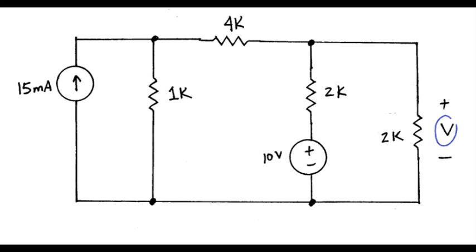First thing you do on superposition method is count up the number of sources you have. We have an independent source over here, another independent source over there. So that tells you that the voltage could be thought of as the voltage resulting from the 15 milliamps source acting alone, superimposed by or added to the voltage due to the 10 volt source acting alone.